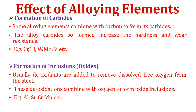Effects of alloying elements — first effect: formation of carbides. Some alloying elements combine with carbon to form carbides. The alloy carbides so formed increase hardness and wear resistance. These are called carbide former elements — for example, chromium, titanium, tungsten, molybdenum, and vanadium. Chromium combines with carbon to form chromium carbide; titanium combines with carbon to form titanium carbide.